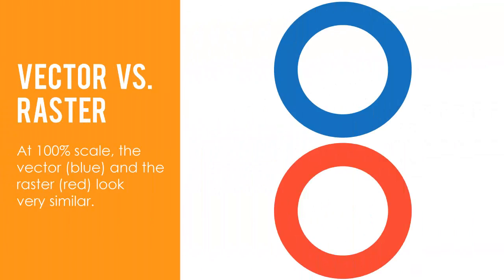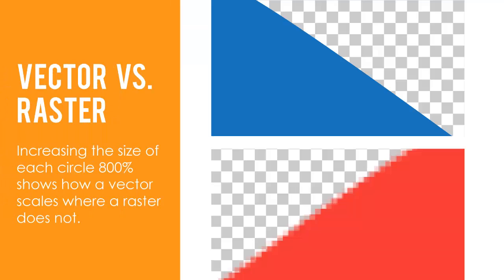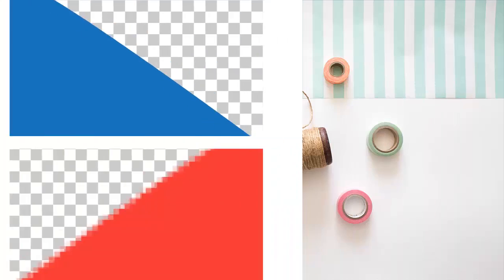Let's look at the difference between a vector graphic, the blue circle, and a raster image, the red circle. At this size, the two circles look pretty similar. However, if you were to enlarge the circles 800%, they would appear quite differently. The vector scales very well — it still has crisp, clean lines — while the raster scales poorly and is jagged. You can really see the pixels that make up the circle's edges.